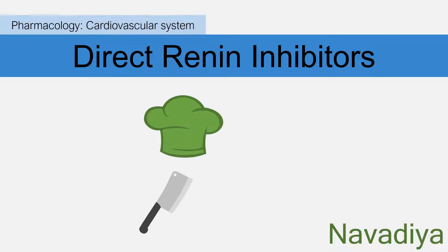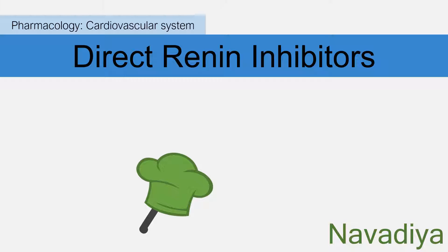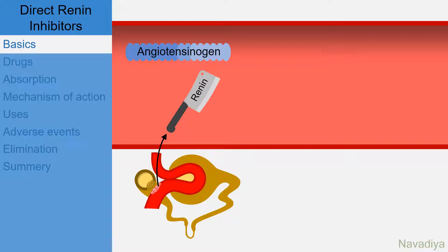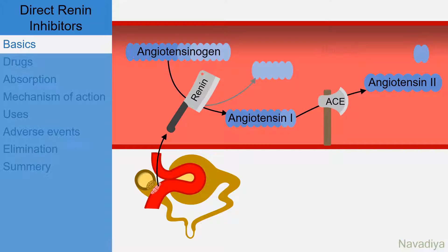Hey guys, in this video we will see direct renin inhibitors. Let's start with some basics first. In the video of renin-angiotensin-aldosterone system, we have seen that juxtaglomerular cells in the kidney release renin. Renin converts angiotensinogen into angiotensin 1. Then angiotensin 1 is acted upon by angiotensin converting enzyme, which converts it into angiotensin 2. Angiotensin 2 mainly acts on AT1 receptors and increases blood pressure by various mechanisms. Here, renin is the rate-limiting enzyme in the synthesis of angiotensin 2.